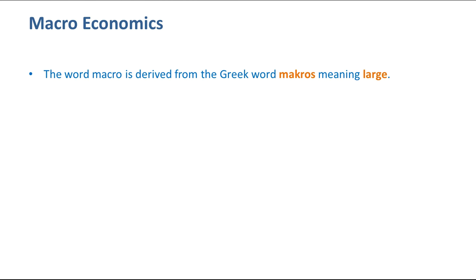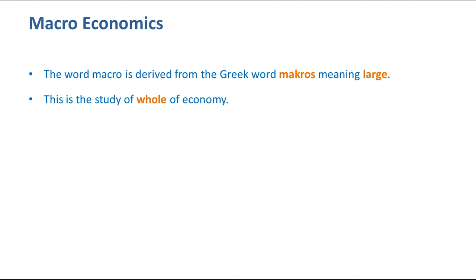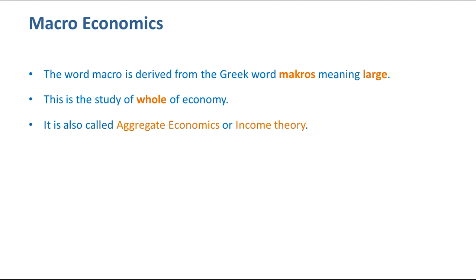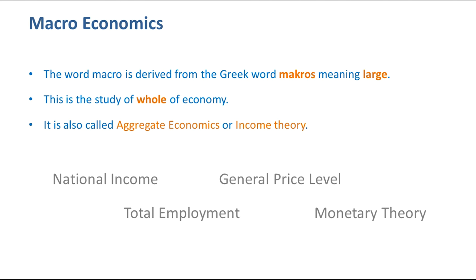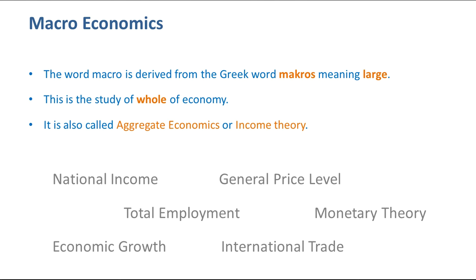Now, what is macroeconomics? The word macro is derived from the Greek word 'macros' meaning large. This is the study of the whole economy. It is also called aggregate economics or income theory. Topics such as national income, general price level, total employment, monetary theory, economic growth, and international trade all come under macroeconomics.